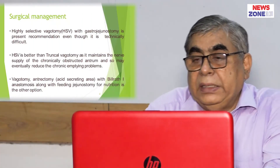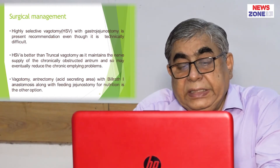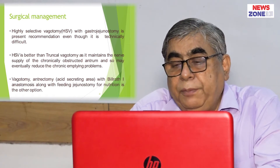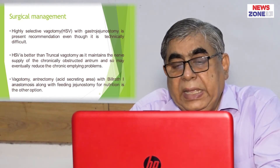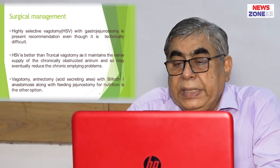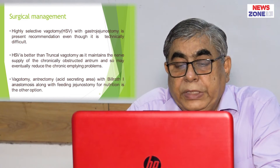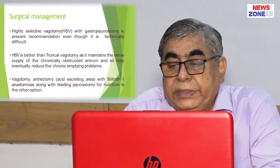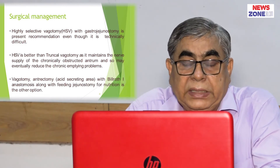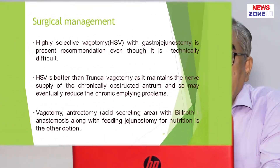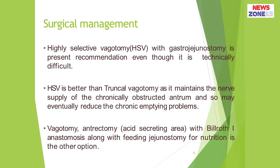When we have any difficulties with the patient, we have to do vagotomy and antrectomy with Billroth-1 anastomosis, along with feeding jejunostomy. Usually, we have to do vagotomy with gastrojejunostomy, which is commonly practised now.